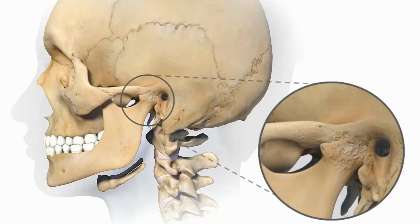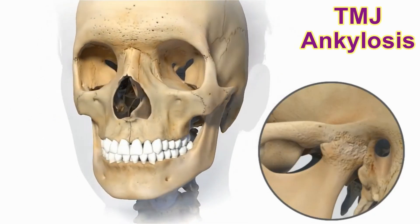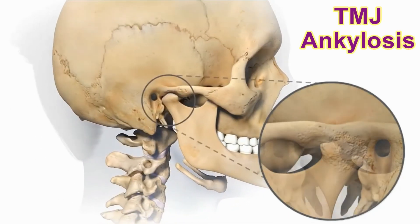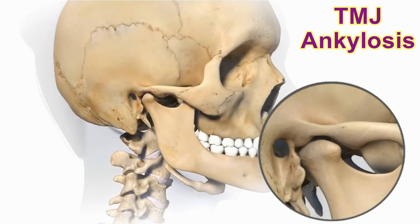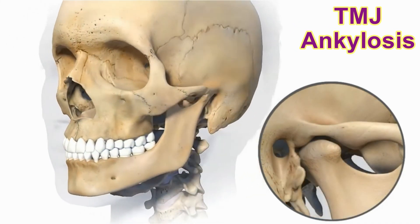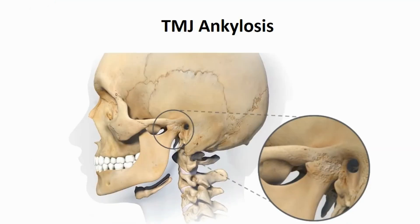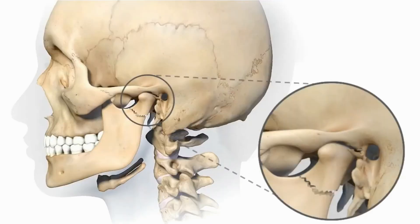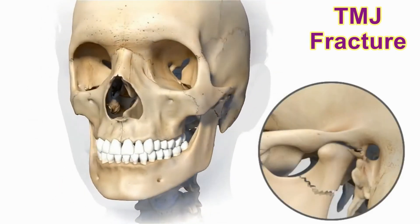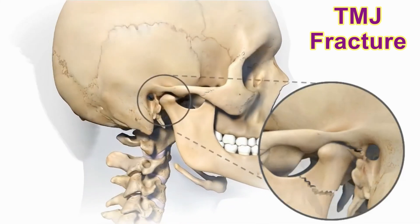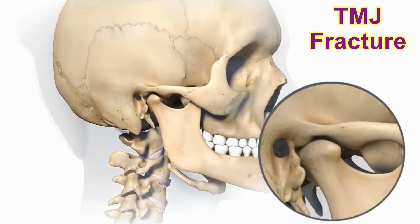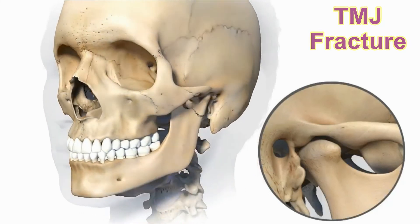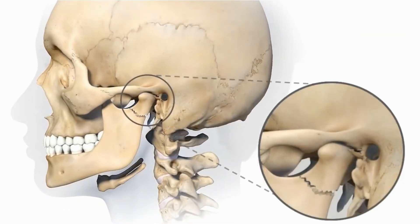TMJ ankylosis is fusion between the condylar head and the mandibular fossa, causing deviation of the mandible to the affected side. This case requires surgical intervention. TMJ fracture usually occurs due to accidents, falls, or violence. Treatment may be conservative or surgical in cases of fracture displacement, which requires reduction and fixation.